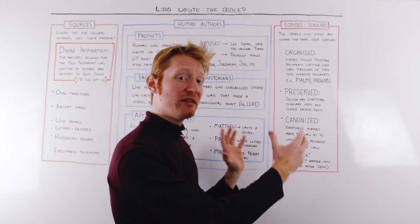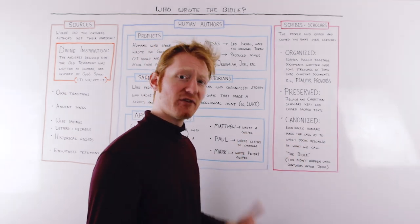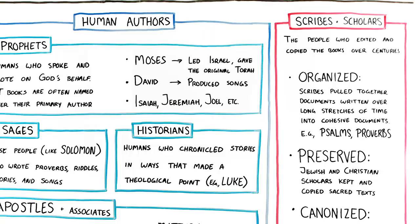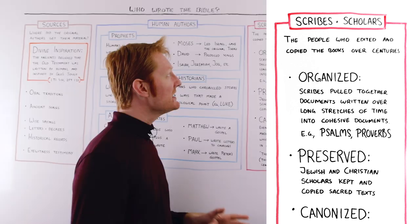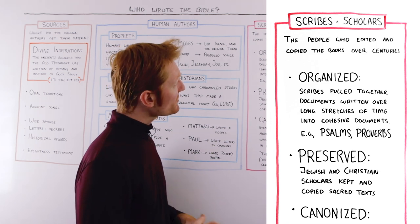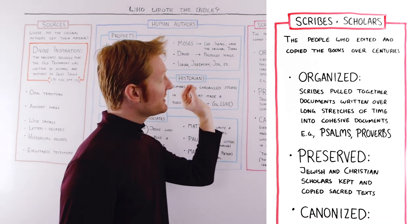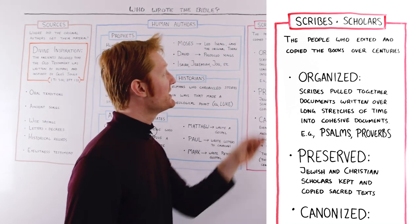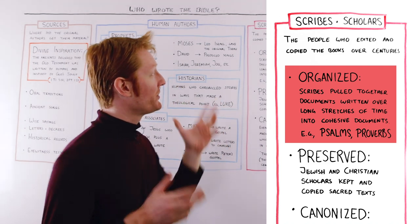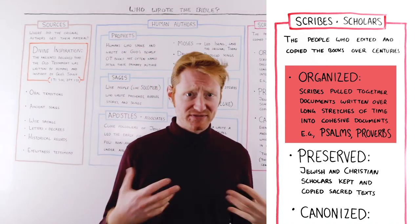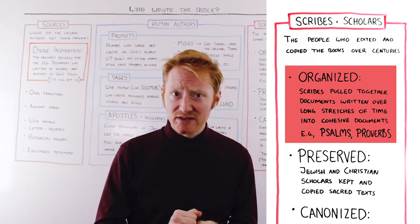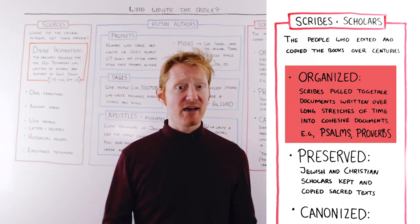This brings us to the third answer to this question of who wrote the Bible. Where did we get the text of the Bible? And we want to look at scribes and scholars. These people played a very crucial role in giving us the Bible that we have today. Because they did three really important things for us. One is they organized Scripture. We have scribes that were pulling together documents that were written over long stretches of time. And putting them together into the cohesive documents and sets of documents that we have now.